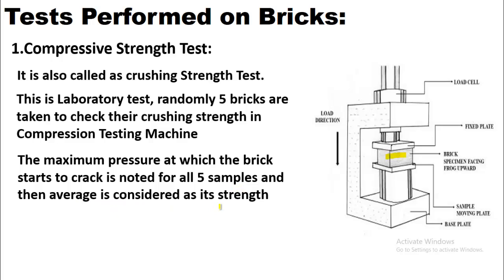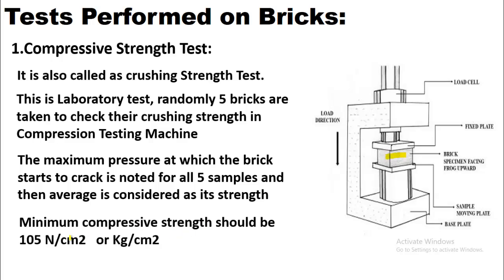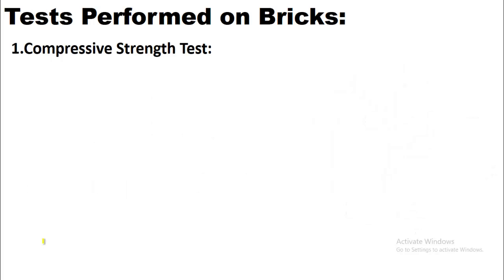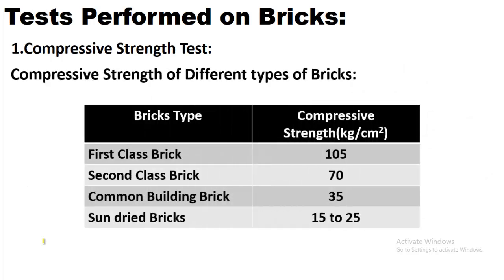To calculate compressive strength, the load applied is noted for all five samples and then divided by the area of the brick facing the load. The minimum compressive strength should be 105 Newton per centimeter square, or kg per centimeter square — this is the strength of a first class brick.